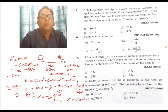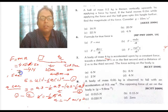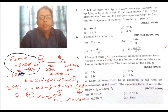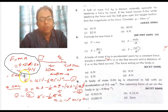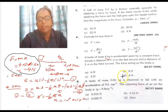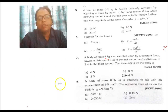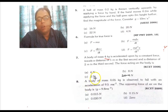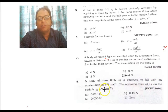The answer is -4 Newtons. Since the motion is retarding, option D is the correct option. Now let's see question number 8: a body of mass 0.05 kg is observed to fall with an acceleration of 9.5 m/s². The opposing force of air on the body is to be found.